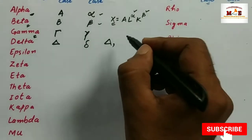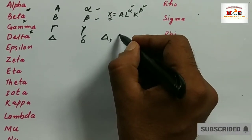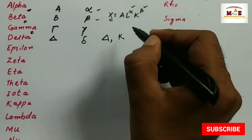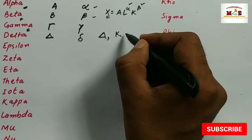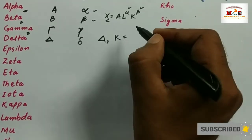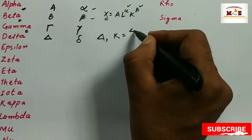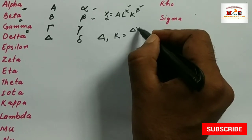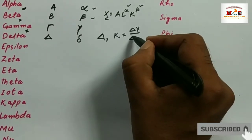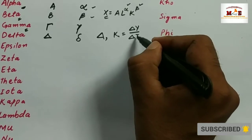It is mostly used when we show that the multiplier equals the change in income due to change in investment.